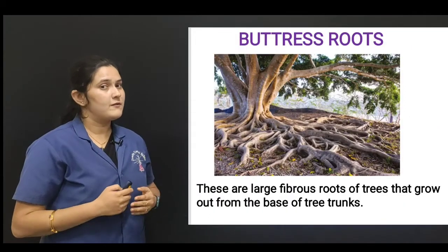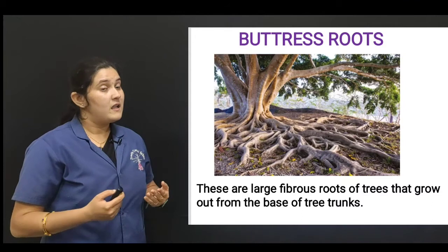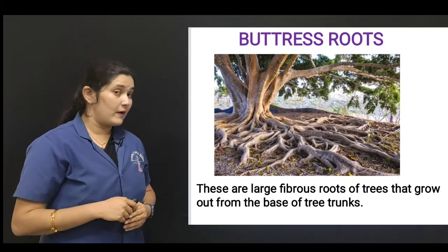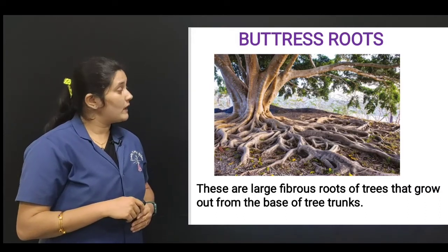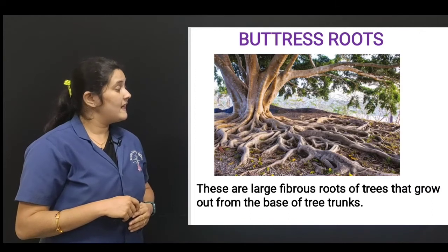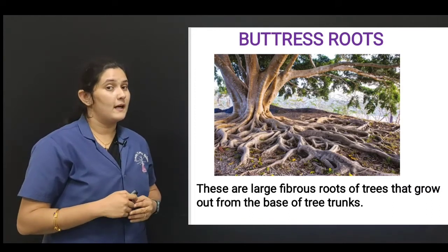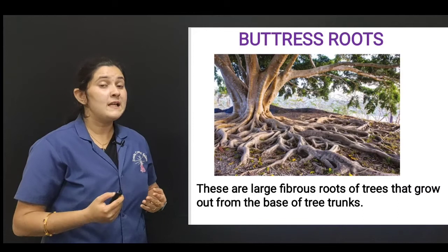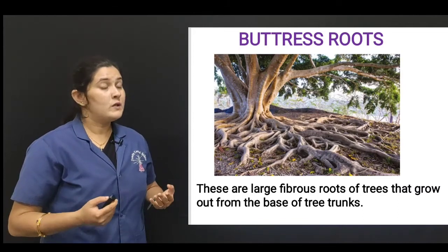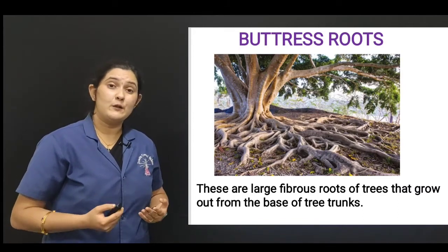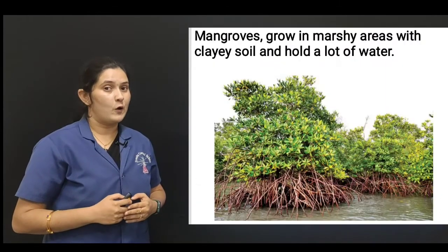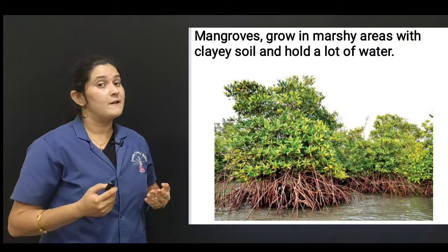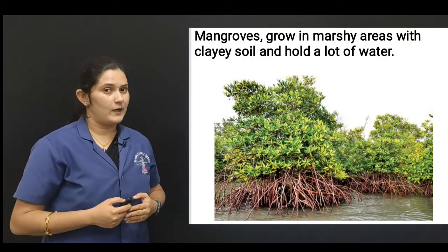Next are buttress roots. These are large fibrous roots of trees that grow out from the base of the tree trunks. Here you can observe buttress roots — they are above the ground. They mostly grow in rainforests. The roots do not go deep into the soil because of the poor quality of the soil; they absorb nutrients from the top layer of the soil.